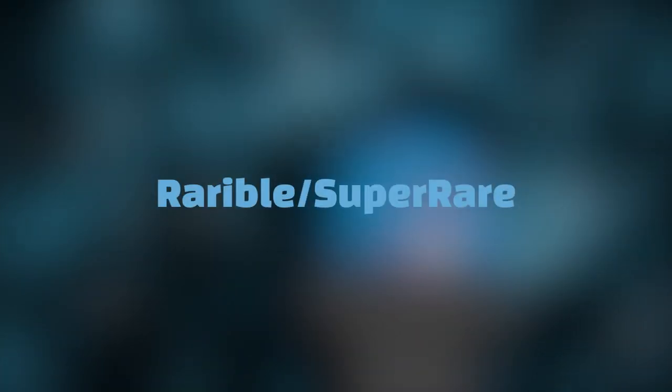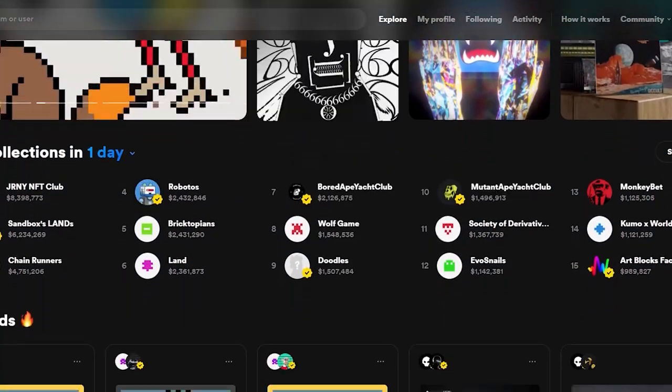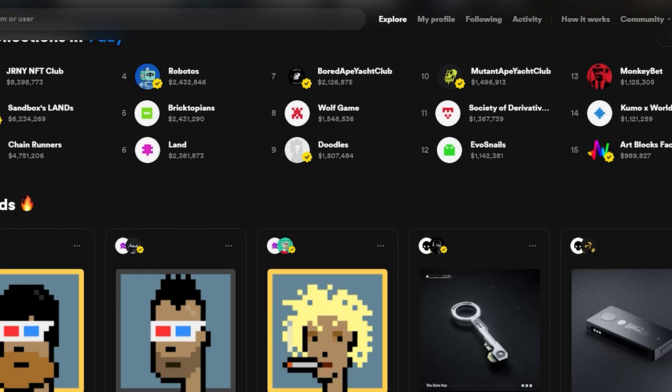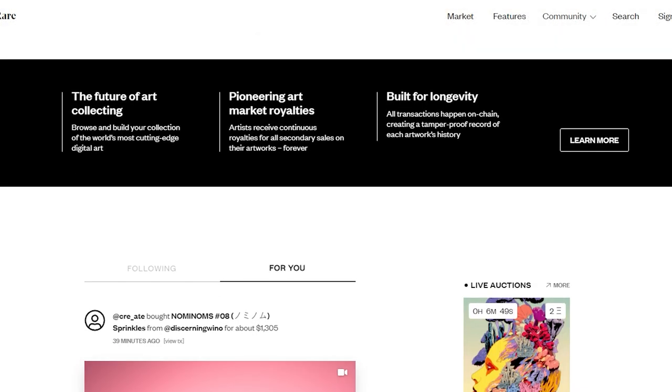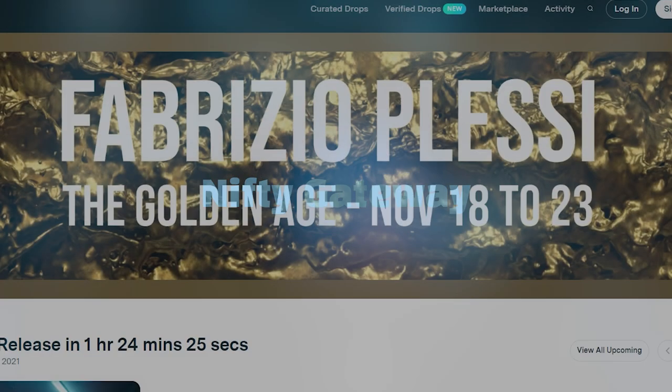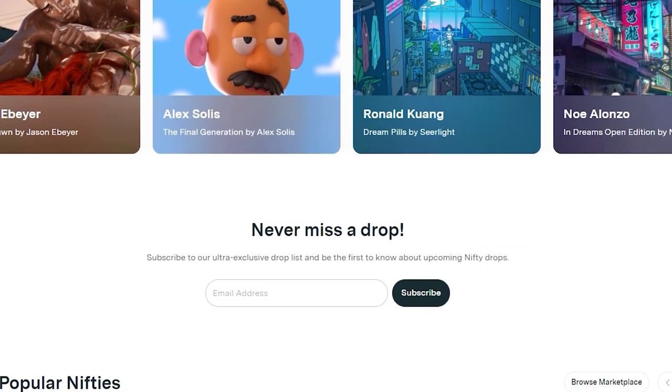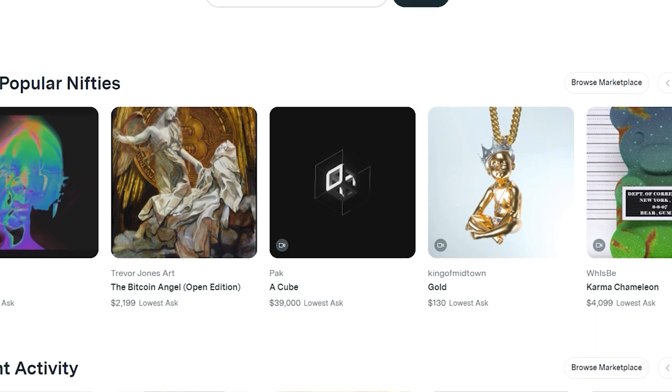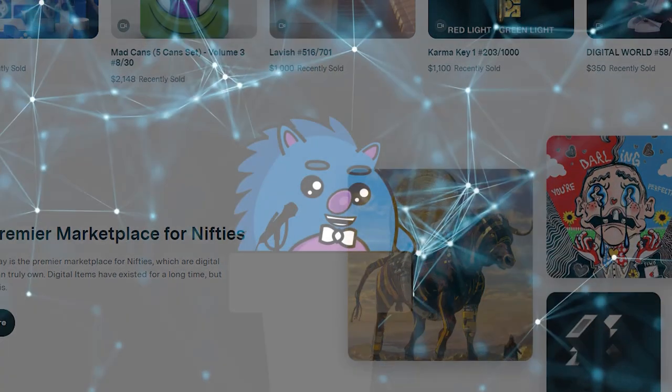2. Rarible slash SuperRare. Rarible and SuperRare are similar to OpenSea, and there are pricing differences at times for the same item. Some people do try to buy on one and sell on the other. 3. Nifty Gateway is also a semi-popular marketplace in NFTs, although more for those who are on-ramping from fiat and may not have Ethereum in a hot wallet ready to go, as credit cards are accepted as a form of payment.